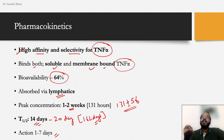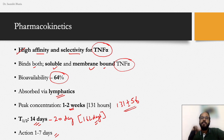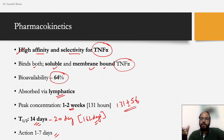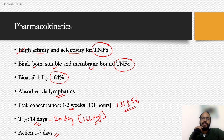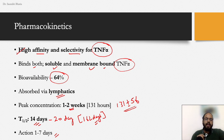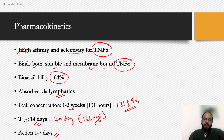Adalimumab requires a higher loading dose at the first administration, followed by a lower maintenance dose repeated either weekly or every two weeks. The initial extra immunosuppressive effect is achieved with the first dose, and then that effect is maintained with the lower dose given continuously every one or two weeks.